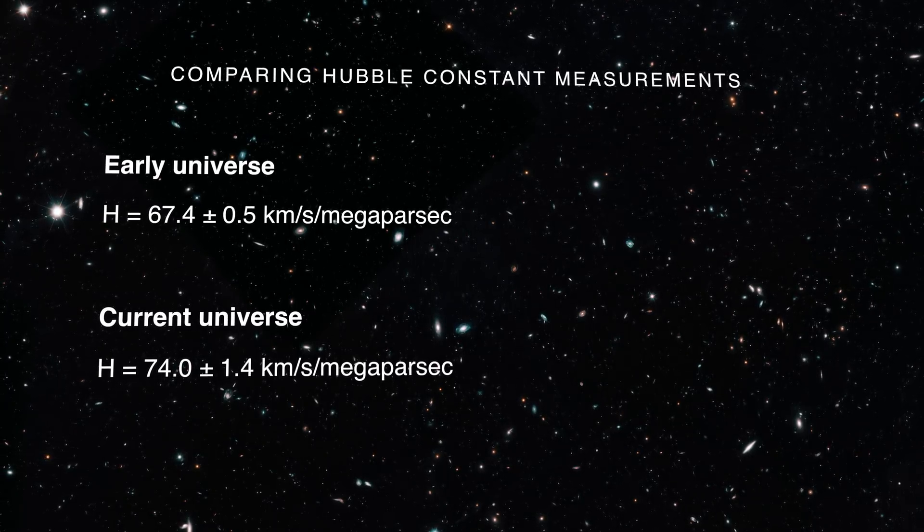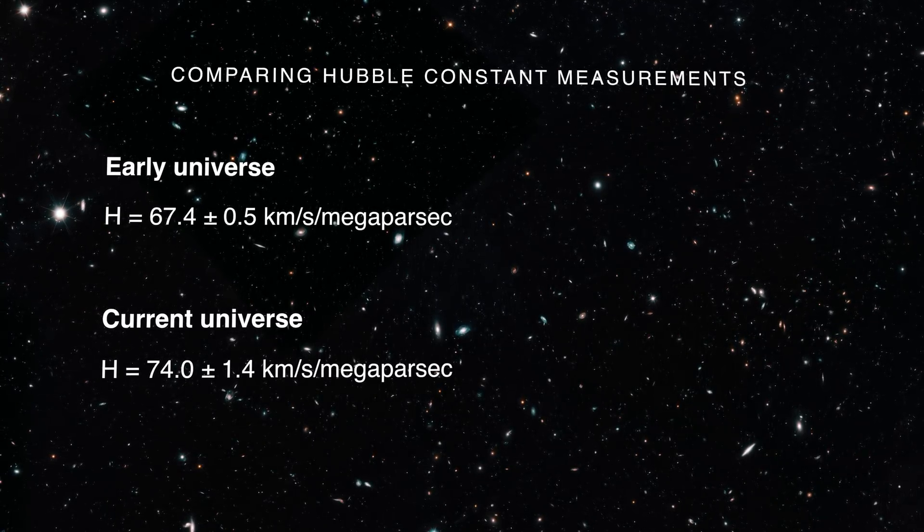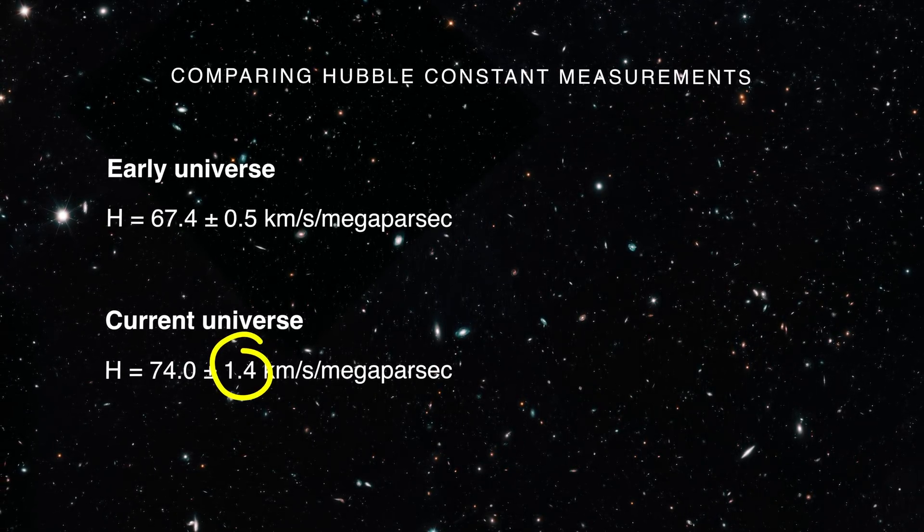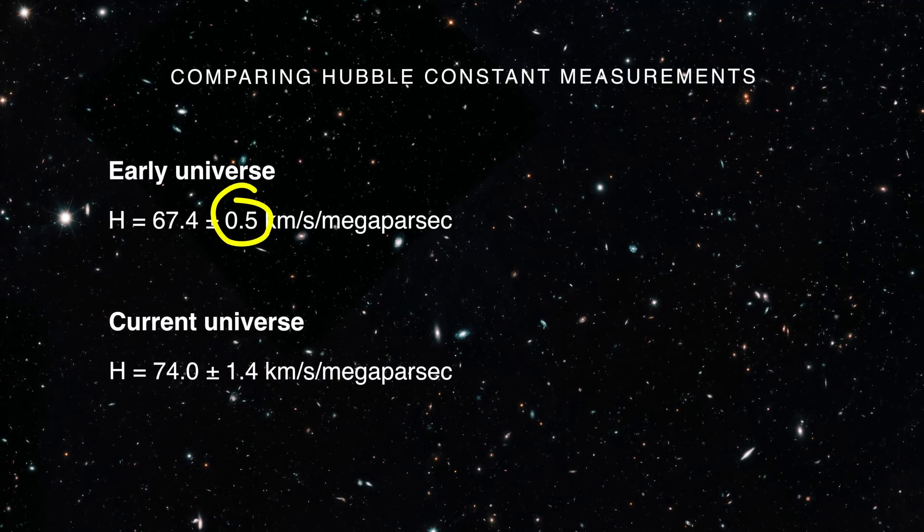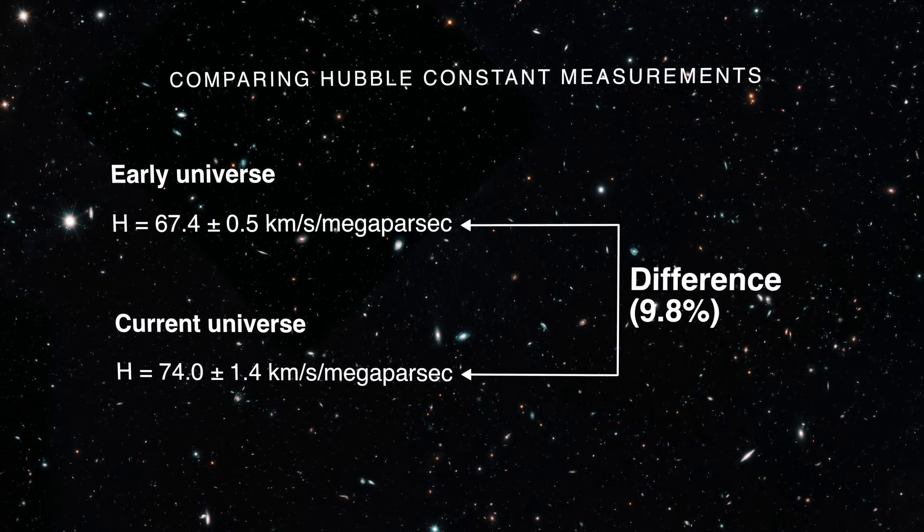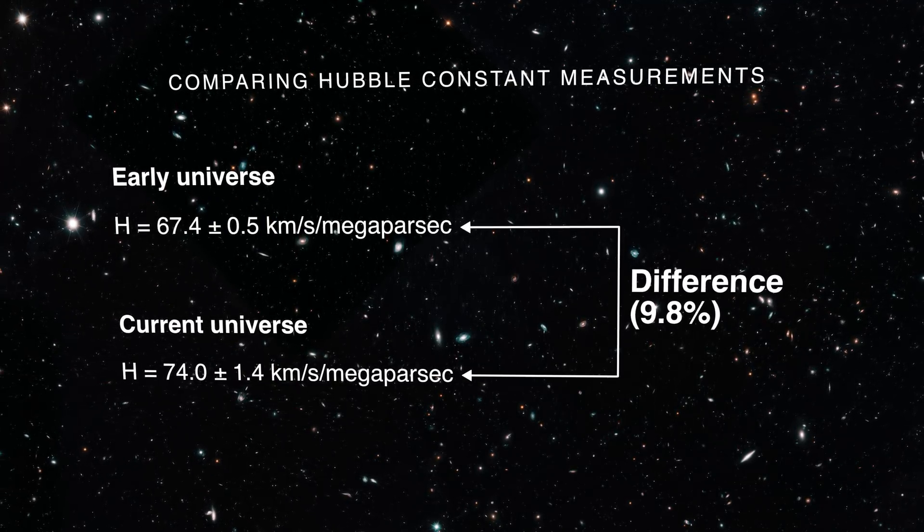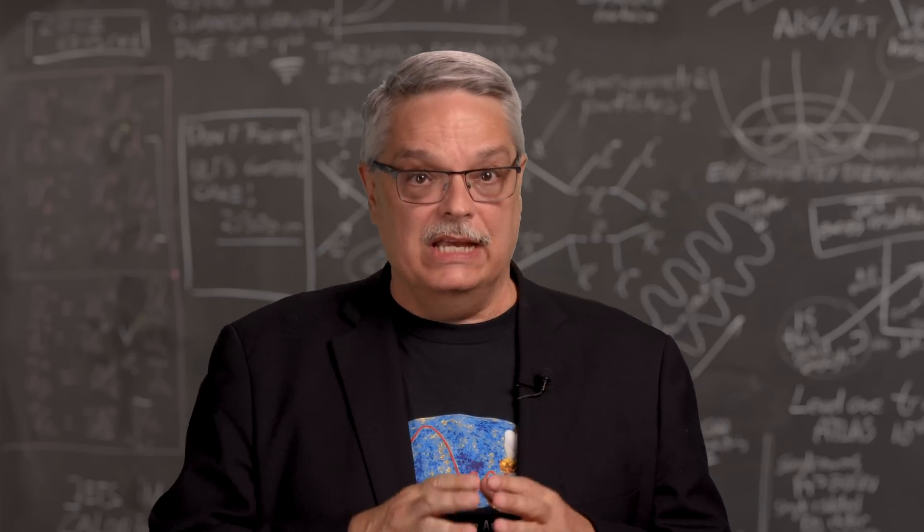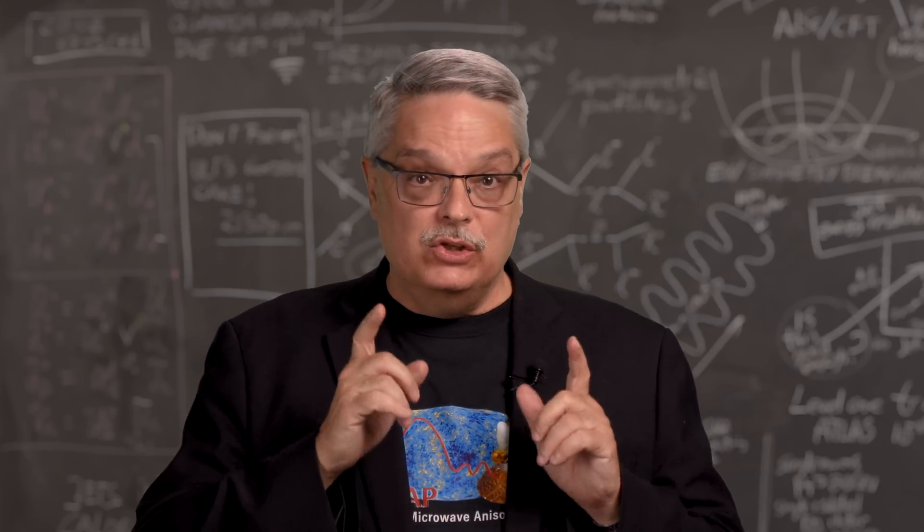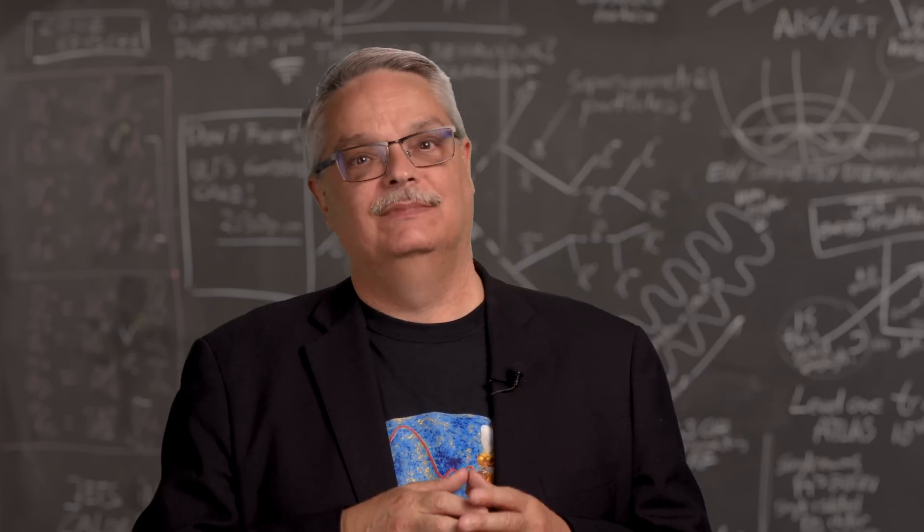We can compare those two numbers. One of them has an uncertainty of 1.9 percent, while the other has an uncertainty of 0.7 percent. Yet, they disagree by just shy of 10 percent. And that is what scientists are worried about. These two numbers disagree. And they shouldn't.